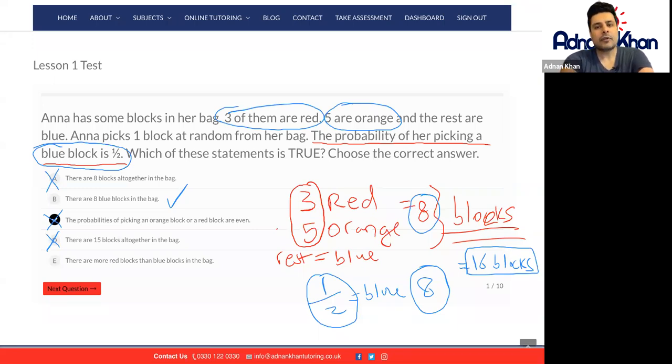And finally E, there are more red blocks than blue blocks. Well we know that there are only three red blocks whereas there are eight blue blocks. So that's also incorrect.